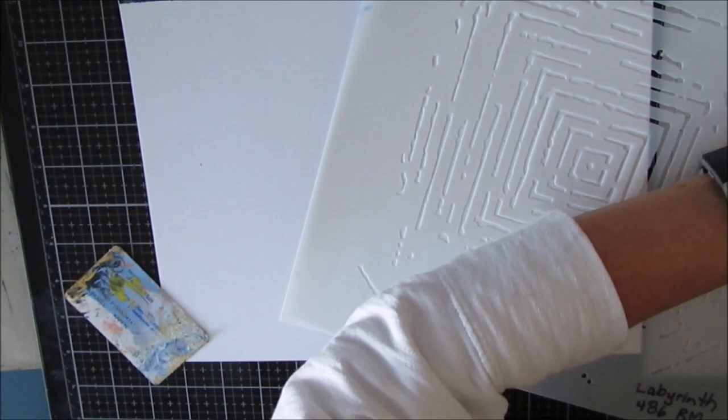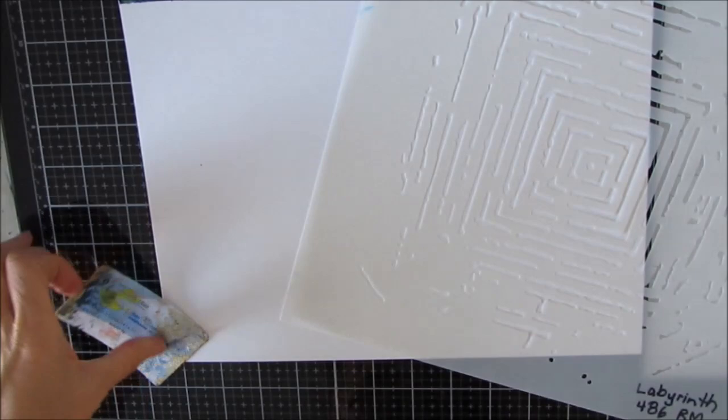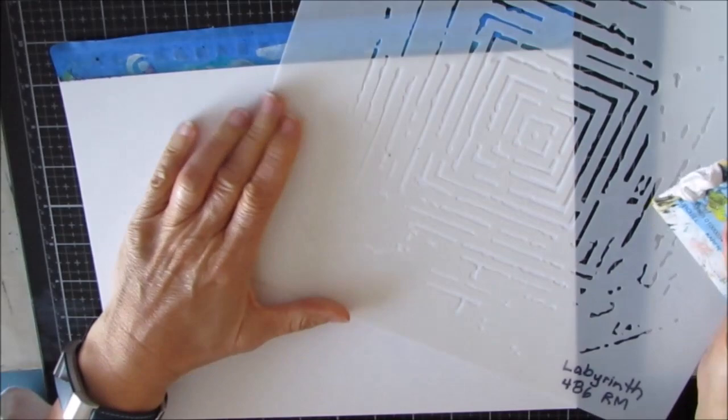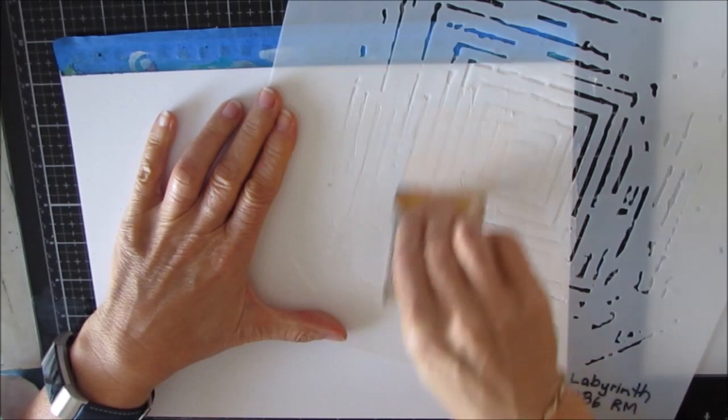I'm working on my 9x12 Canson Mixed Media Art Journal. I've taken it off the coils, which is why you're only seeing one page. This allows me to work on a flat surface and I don't have to work around the coils. I've taped off the top because I like maintaining that straight edge. When all the pages are done, I will reassemble on the coil.